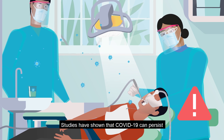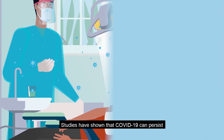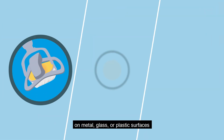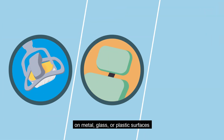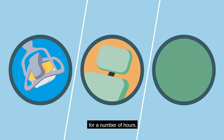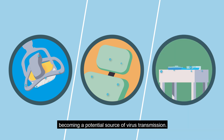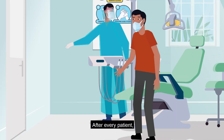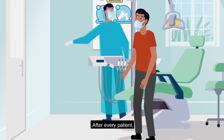Studies have shown that COVID-19 can persist on metal, glass or plastic surfaces for a number of hours, becoming a potential source of virus transmission.